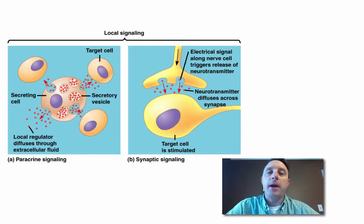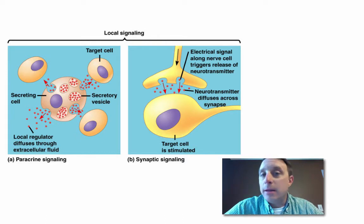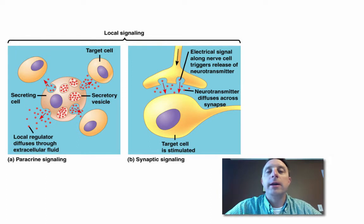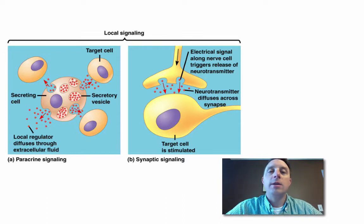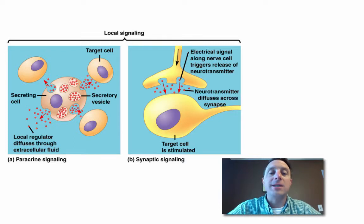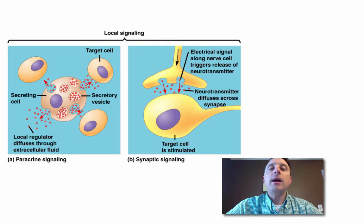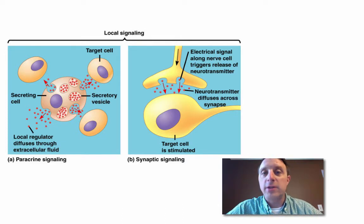Paracrine signaling is used in the immune system to activate different cells, and we will see that again. Synaptic signaling is shown in the nervous system when cells need to communicate across a very small area called a synapse. So these are local signaling — cells that are not physically touching but are relatively close to each other.